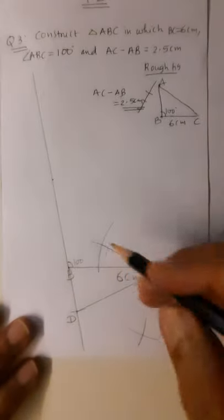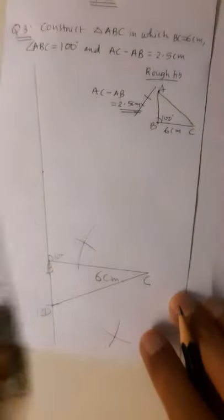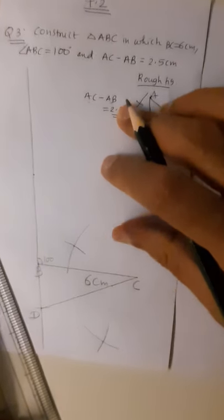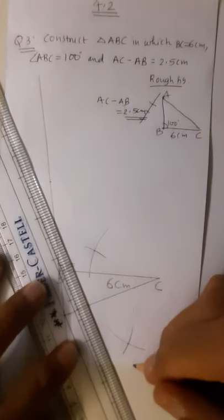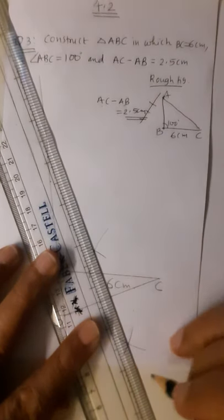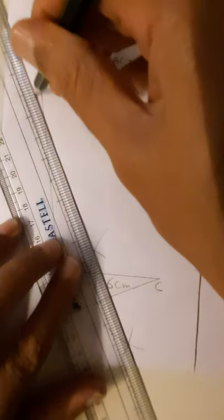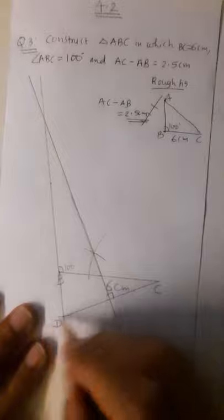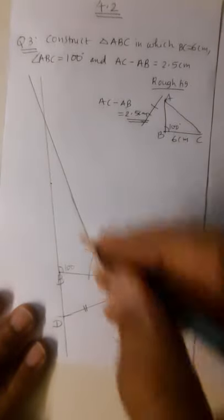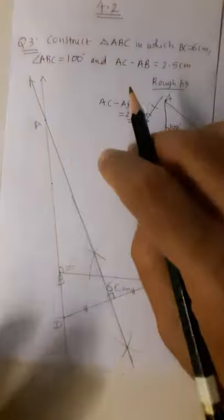These are the points of intersection where the two arcs cut. I take a long scale and align at those two points of intersection, then draw the perpendicular bisector of segment DC. This shows a 90-degree angle. This perpendicular bisector will cut the ray we drew previously at point A.